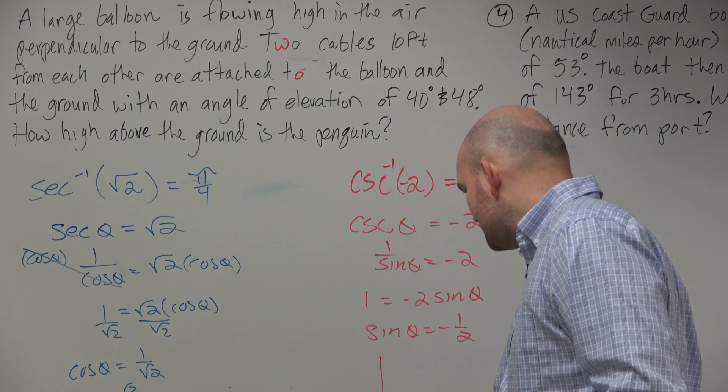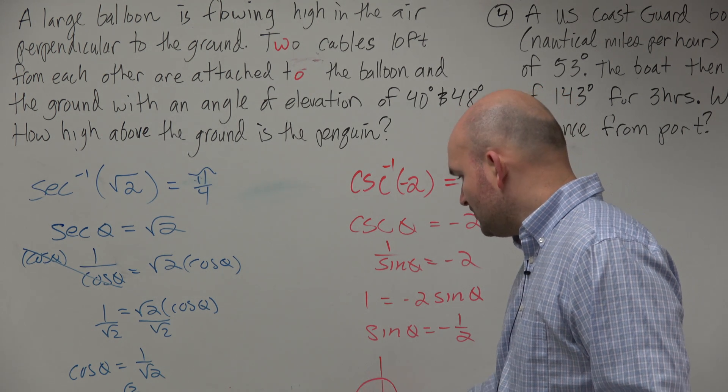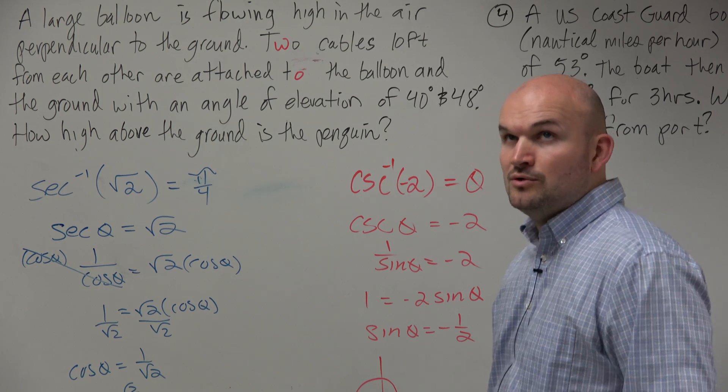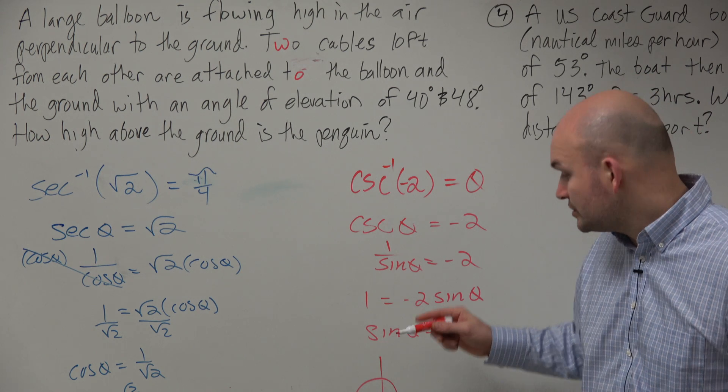Well, what is this angle? We know it's pi over 6 away from the x-axis. We don't want to go this way and do 11 pi over 6, because then it'd be outside of the domain restrictions.